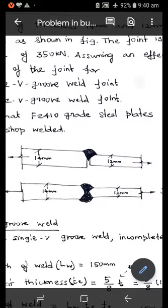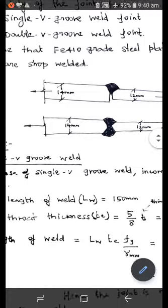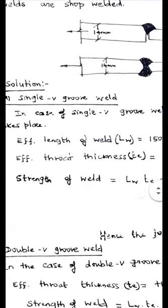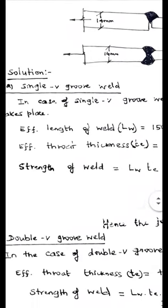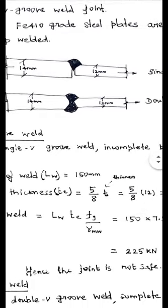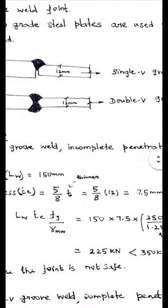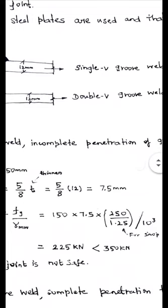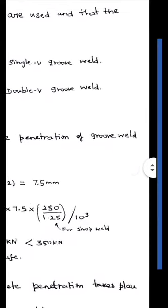So welding is done only on one side. First solve the first part, single V groove weld. In this case, the welding is done only on one side, we can call this as an incomplete penetration of the groove weld.